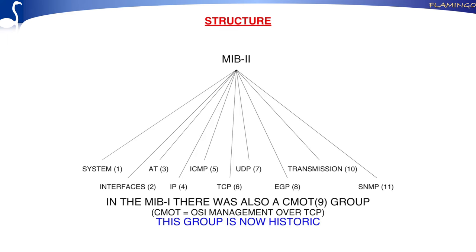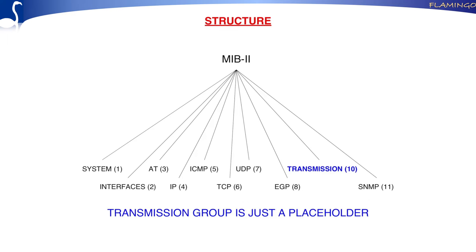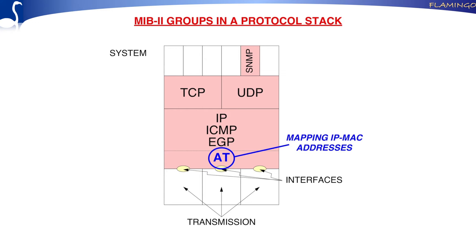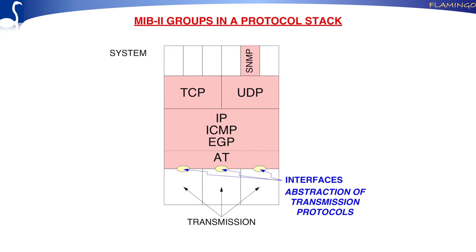The transmission group is in fact just a placeholder — it doesn't have any variables in MIB-2, but it allows you to put transmission MIBs under it. And the SNMP group was added in MIB-2, which wasn't in MIB-1. This is the protocol view of a system, and the colored items are the groups defined in the MIB-2. The address translation is in fact the ARP (address resolution protocol) stuff — it does the mapping between IP addresses and MAC addresses.